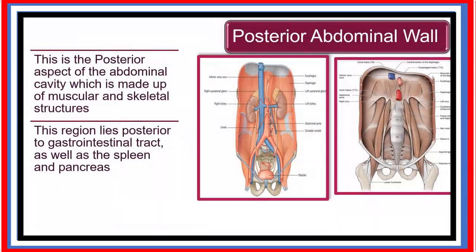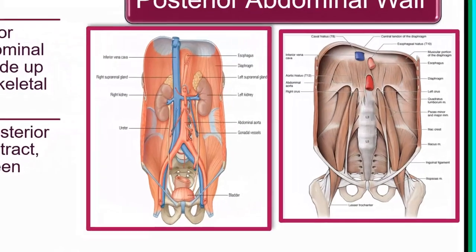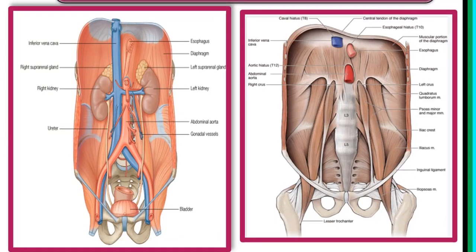This is the posterior aspect of the abdominal cavity — that's the region of focus in this lecture. In these two images we have, this is the region we call the posterior abdominal region. It covers part of the abdominal cavity proper and even incorporates part of the pelvic cavity.